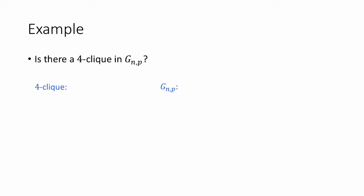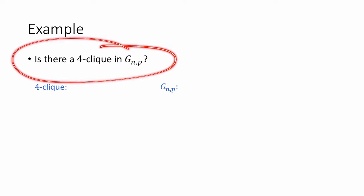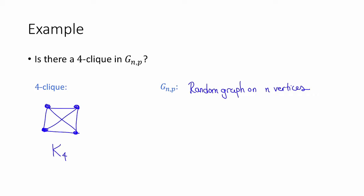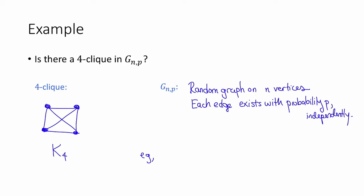The question for this example is: is there a 4-clique in G(n,p)? A 4-clique is just the complete graph on four vertices, denoted K4. G(n,p) refers to a random graph on n vertices, where each edge exists with probability p independently. For example, a draw from the distribution G(6, 1/2) might look like this.